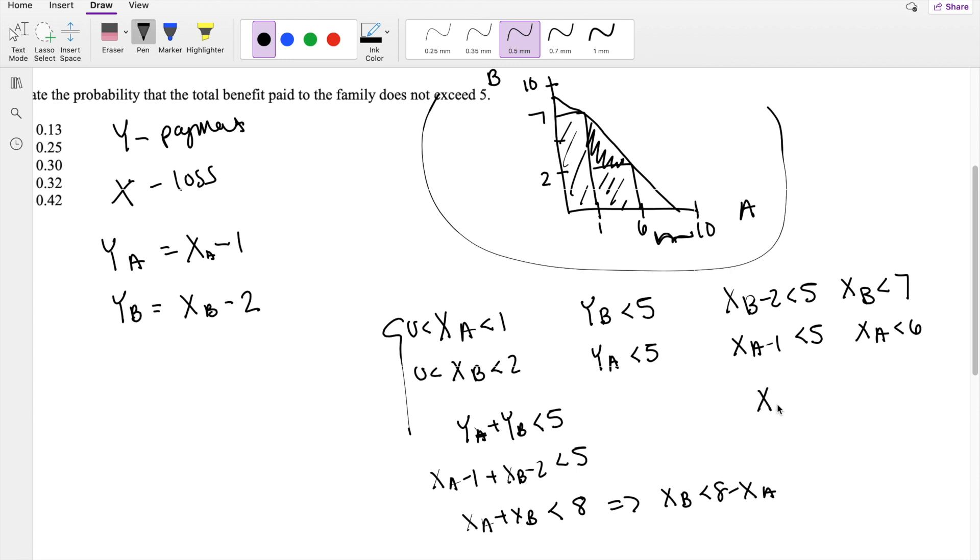So like if X_A is equal to 7, let's say, so like this point right here, and we know that Y_A is equal to X_A minus 1. If 7 minus 1, that's equal to 6. So the total benefit here, just A by itself, is already 6, which is definitely bigger than 5. So this area right here, this little triangle, is not included. And likewise, that same logic applies to this little triangle right here too. So the area that we're looking for is just these 3 blocks right here.